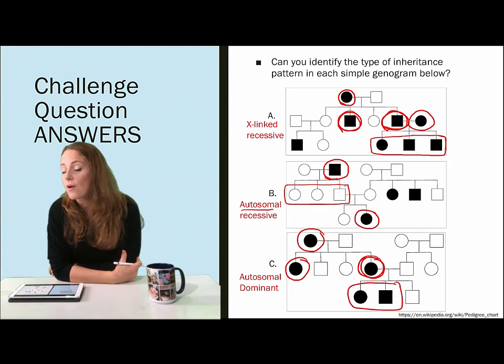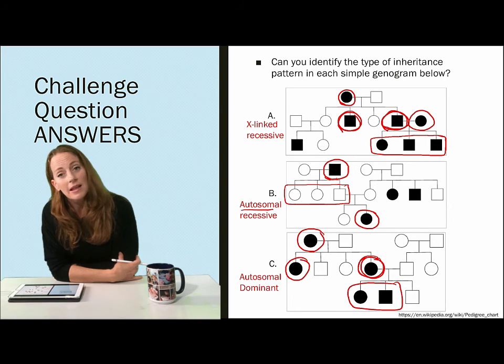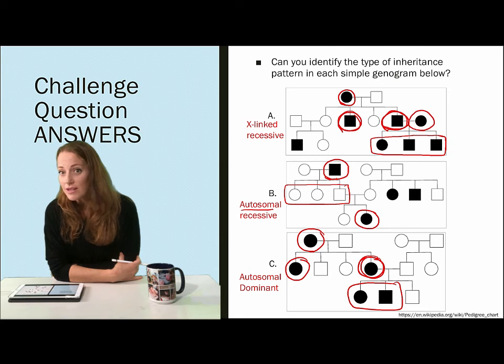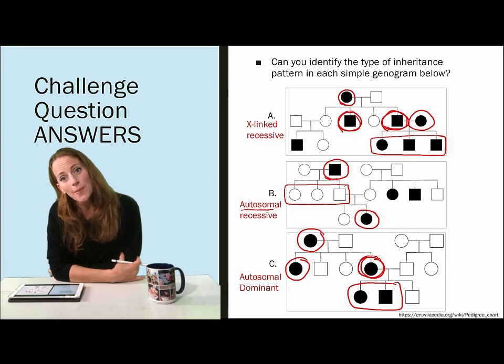This is a pretty strong inheritance and points to a dominant trait. Notice that there's no predominance of males versus females. In fact there's more females here than males. So this points to the fact that not only is it dominant but it's also autosomal.